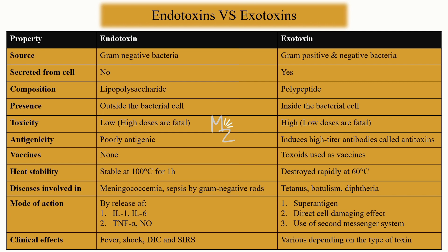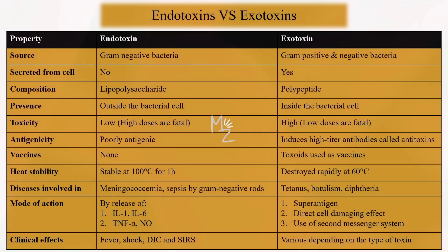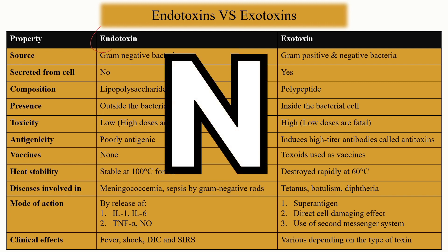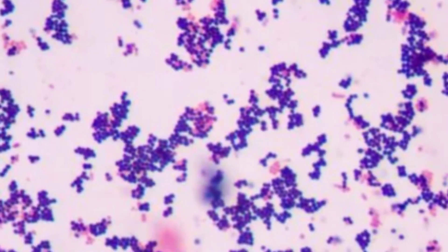What's the source of release of the endotoxin and the exotoxin? Endotoxin is released by gram-negative bacteria. I've got a tip here: endotoxin has the letter 'n' in it — endo — and negative also starts with 'n', so you can memorize it that way. Exotoxin is released by both gram-positive and gram-negative bacteria.